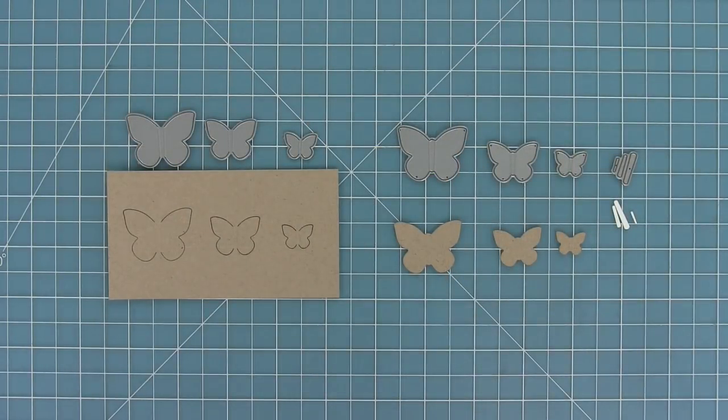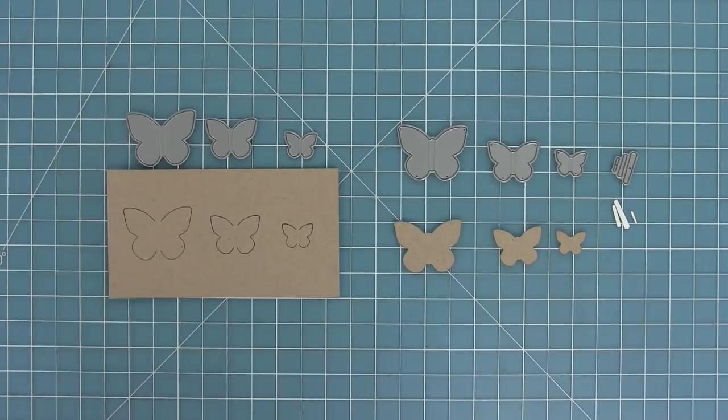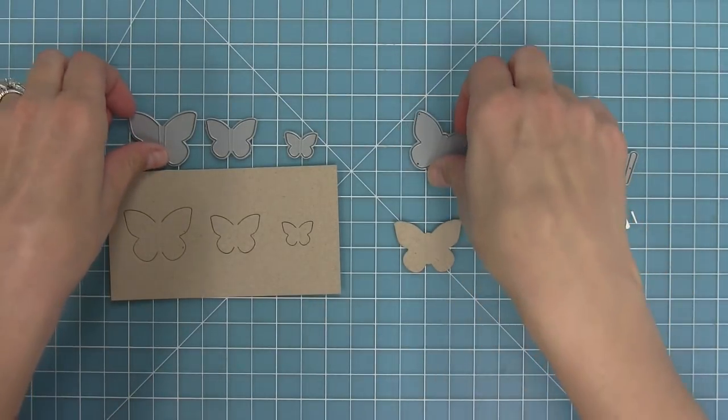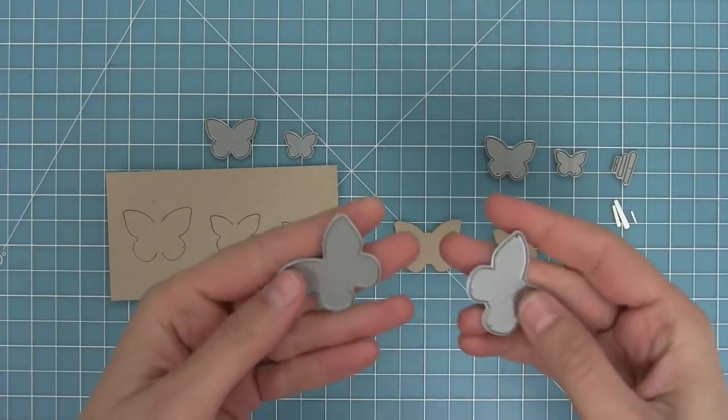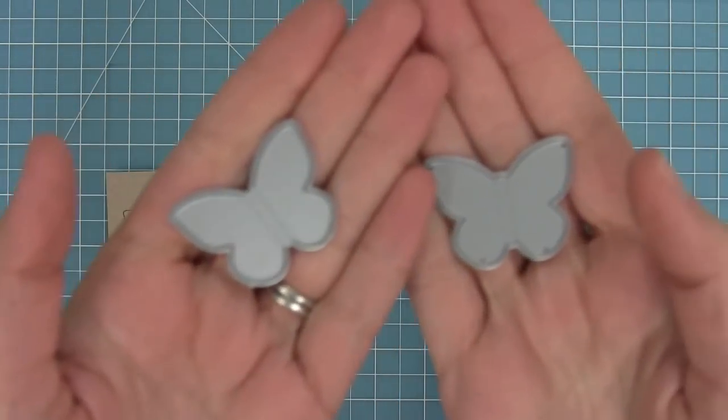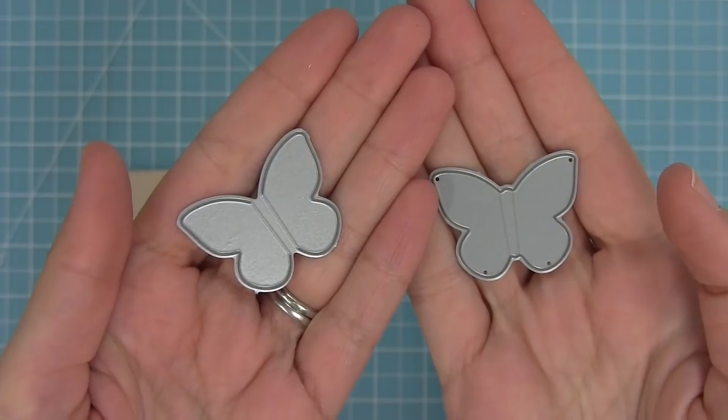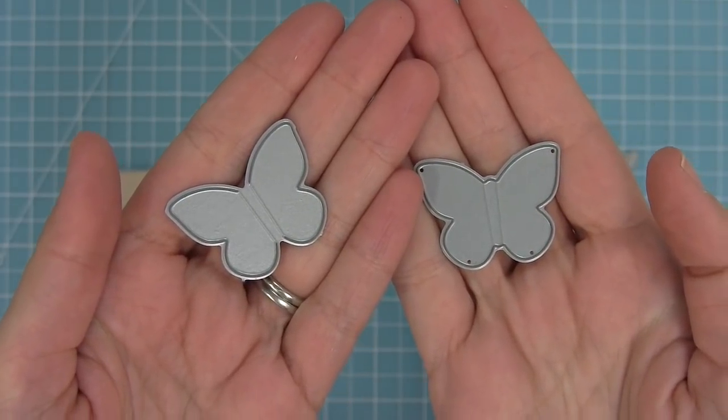This set has three different butterflies in two different styles. One of the styles cuts the butterfly from the paper leaving it attached to the paper, and then the other butterfly just cuts the butterfly out. So it's really cool because you can get two different looks.